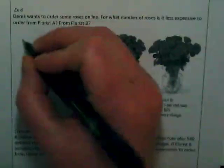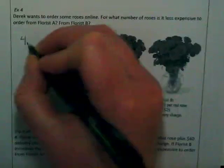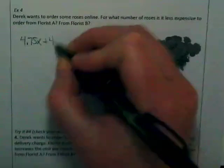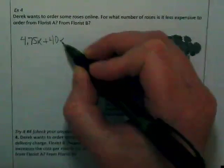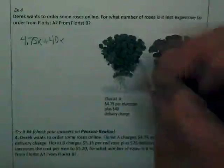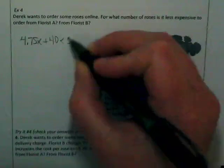So we would set this up as 4.75X plus 40, and we want to know it's less than for A. So on the right side, we're going to put Florist B.